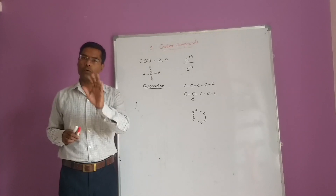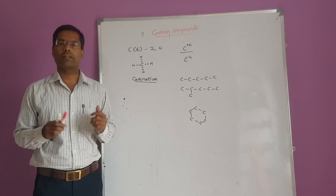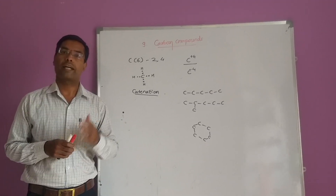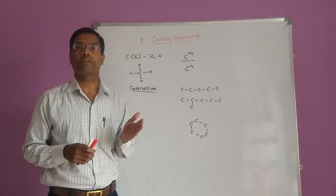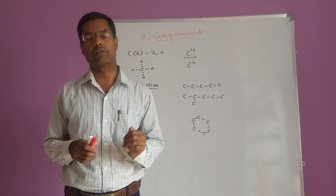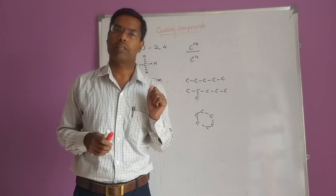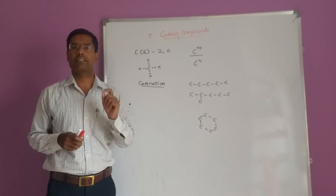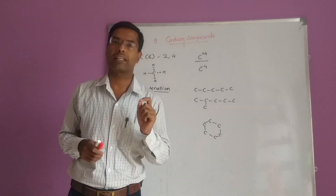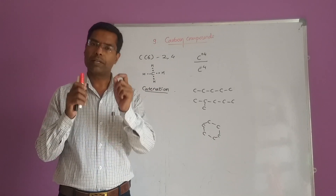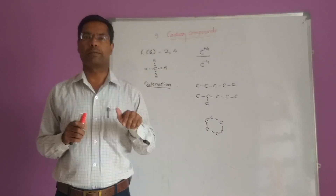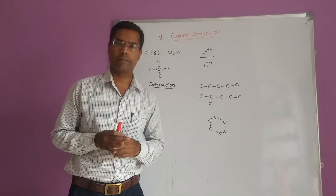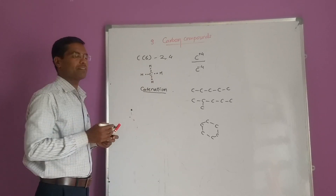Carbon compounds are covalent compounds. Compounds are formed when atoms of elements combine in a fixed proportion to form molecules. There are mainly two types of compounds: ionic compounds and covalent compounds. When metals and non-metals combine, they generally form ionic compounds, involving loss and gain of electrons. The chemical bond formed by exchange of electrons is an ionic bond, and the bond formed by sharing of electrons is called a covalent bond.